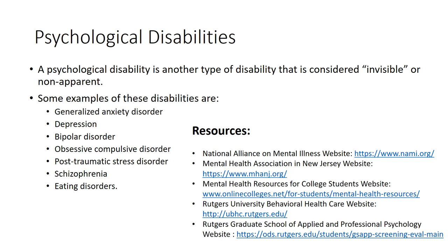Rutgers University provides many resources for its students who have or may have psychological disabilities. This includes the University Behavioral Health Care (UBHC) and the Graduate School of Applied and Professional Psychology (GSAPP), where you can learn more about behavioral health care and evaluations. Please keep in mind that the Office of Disability Services cannot evaluate you, but rather can help determine the reasonable accommodations for you once you are evaluated by the appropriate professional.